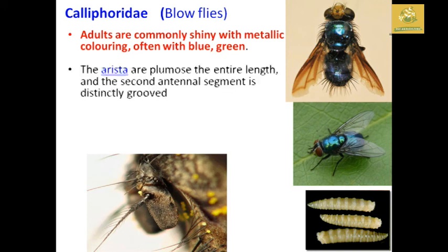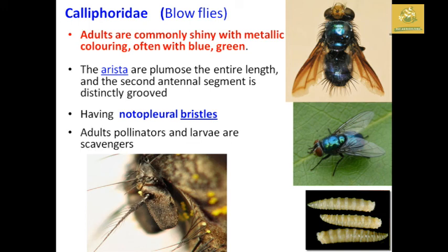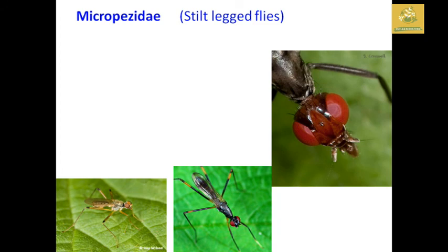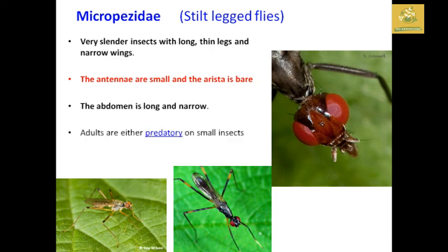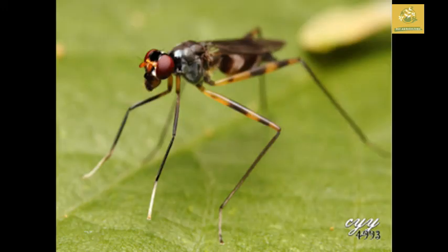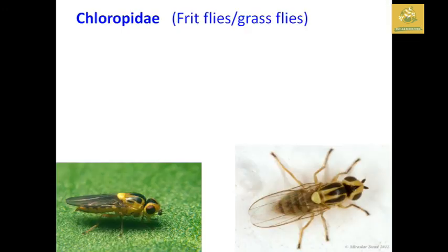Calliphoridae — the blow flies. Adults are commonly metallic, often blue or green in color. The arista is plumose and the entire length of the second antennal segment is distinctly grooved. Having notopleural bristles gives a slight coloration in the wing portions. Adults are pollinators and larvae are scavengers. Micropezidae — the stilt-legged flies — are very slender insects with long thin legs. The antenna is small, the arista is bare, and the abdomen is long and narrow. They are either predatory or feed on small insects.